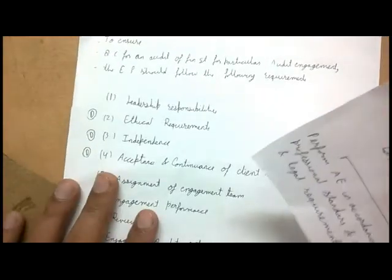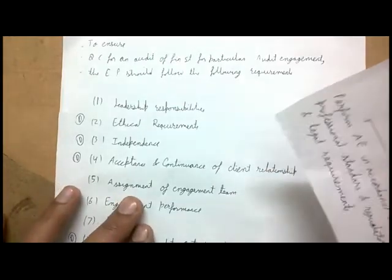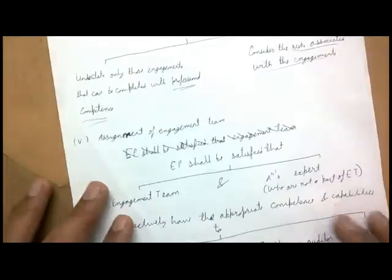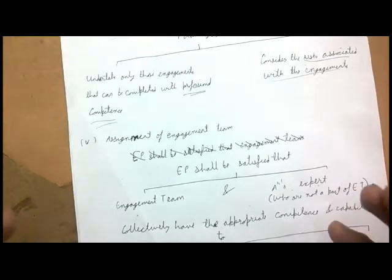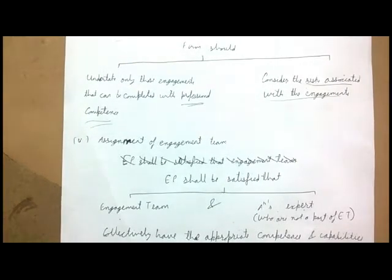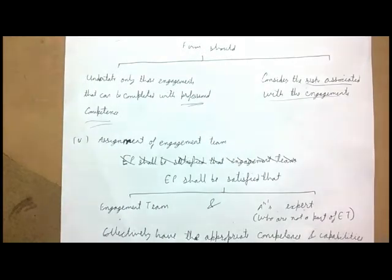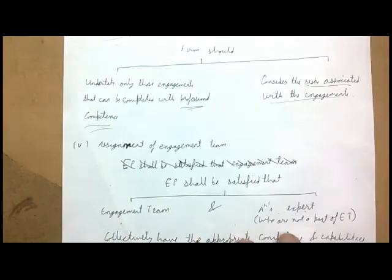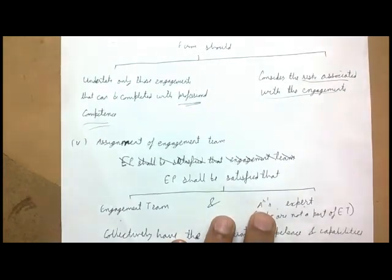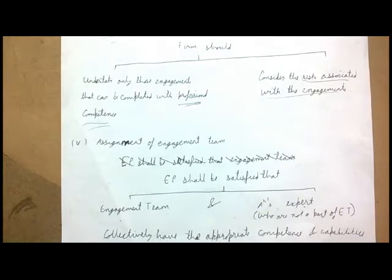Moving to assignment of the engagement team: the engagement partner shall be satisfied that the engagement team and any auditor's expert collectively have the appropriate competence and capabilities. For example, when auditing a bank, at least one senior member of the engagement team should have prior bank audit experience. An auditor's expert is a person who is not an expert in auditing or accountancy but in a specialized third field.